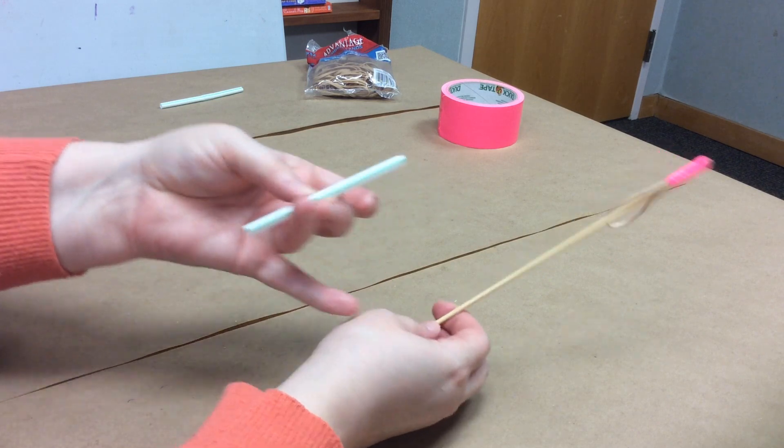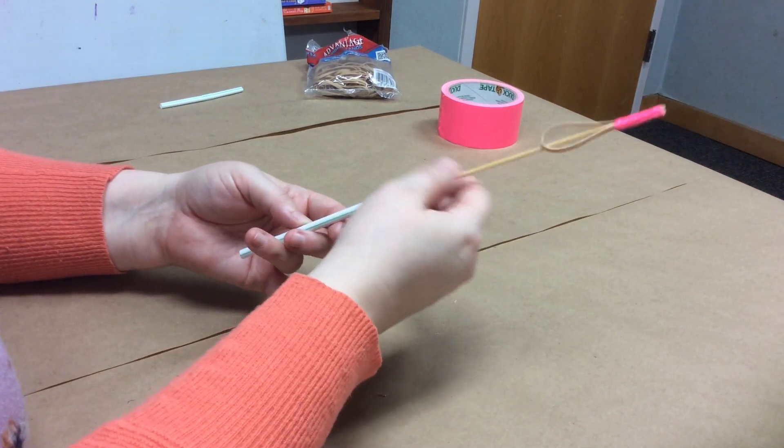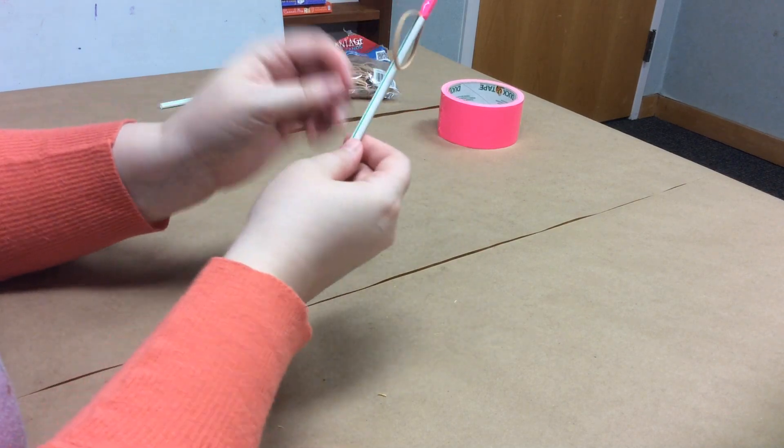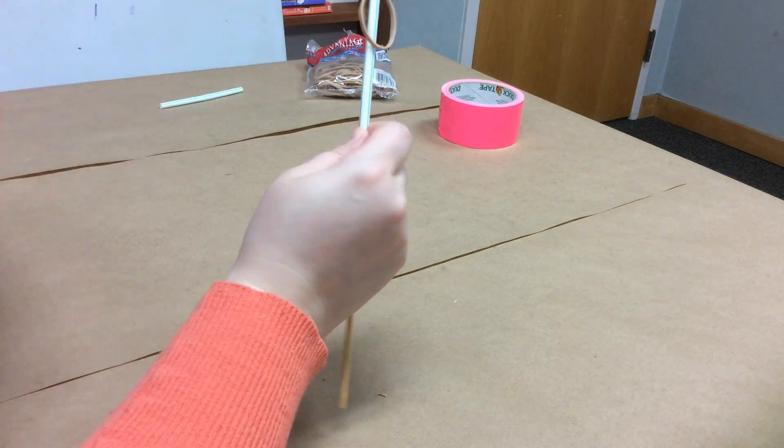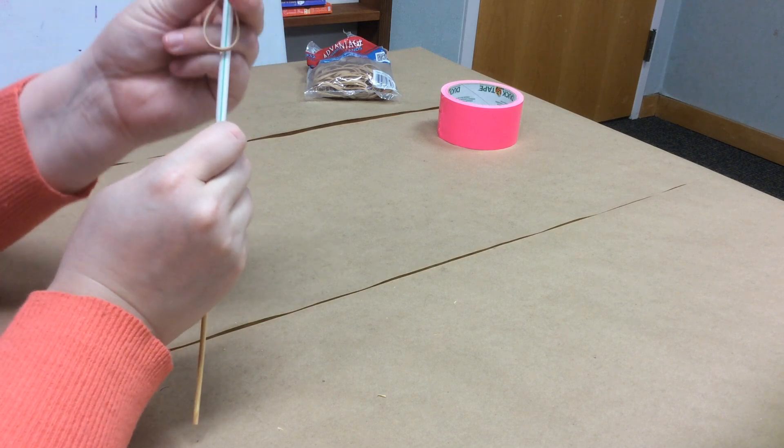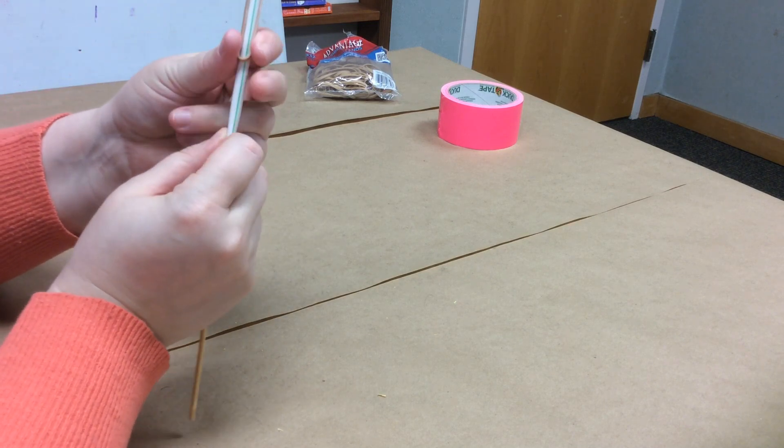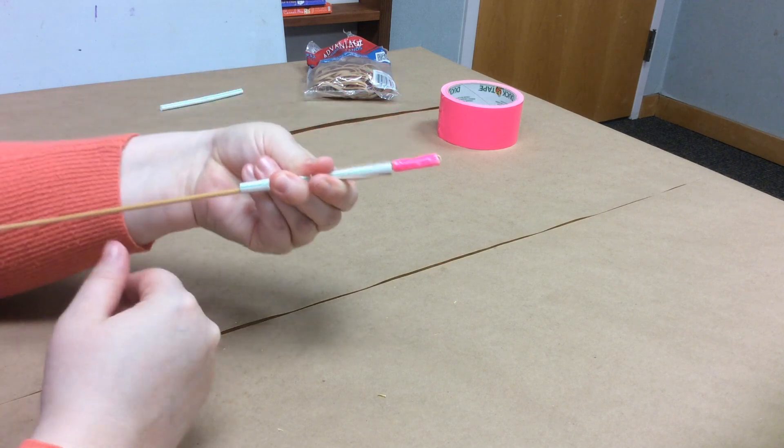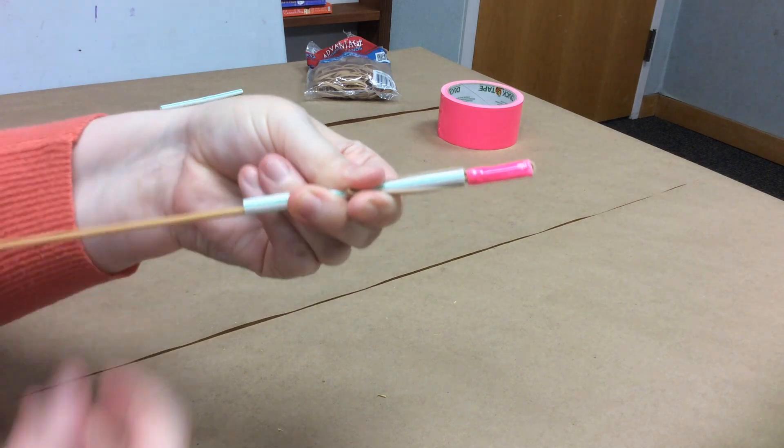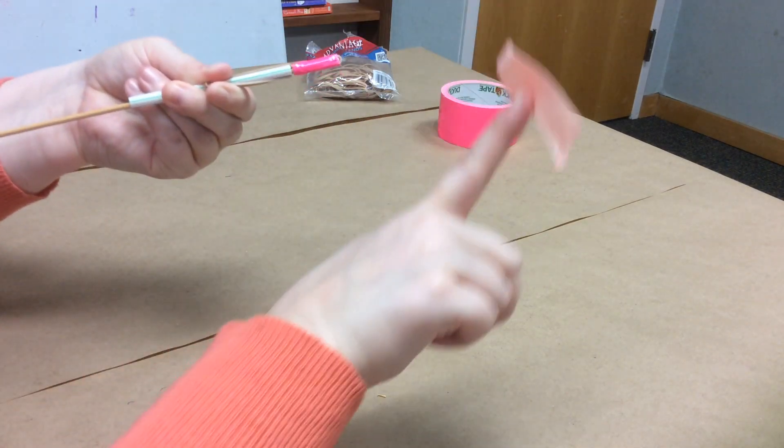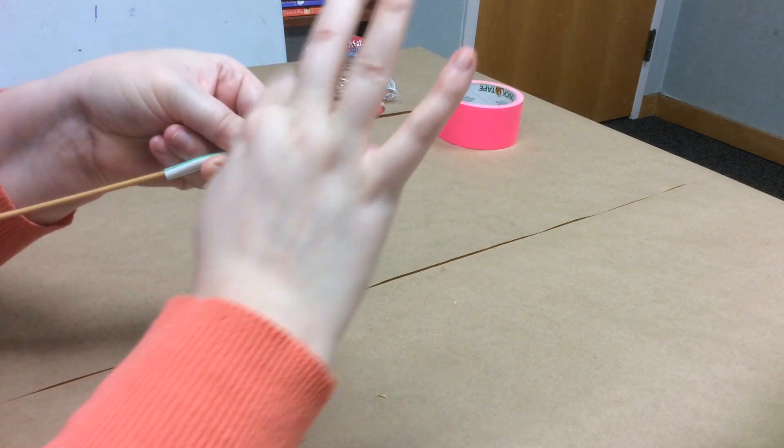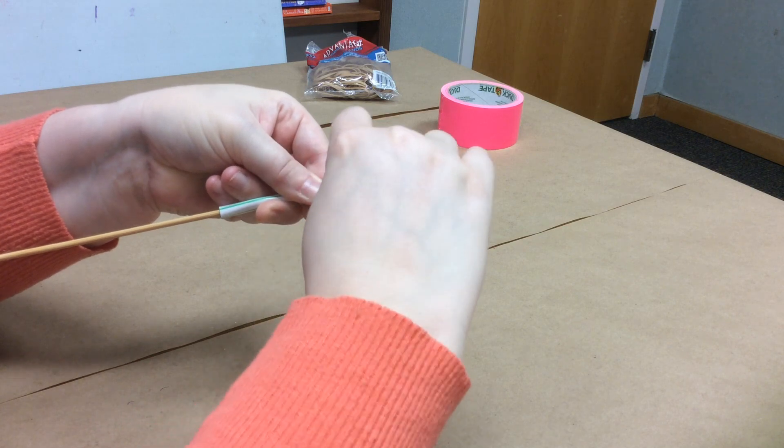Now you're going to take your straw. You're going to slide it up your dowel all the way up to the tape. And so your rubber band is going to be kind of sitting on top of your straw like that. So now you're going to hold your rubber band down and your dowel down or your straw down so that your rubber band is on either side of your straw. And you're going to take your other piece of tape and we're going to tape the rubber band to the straw.